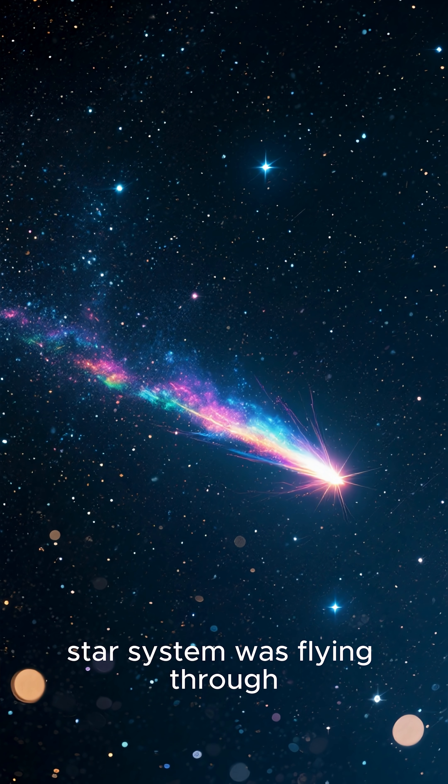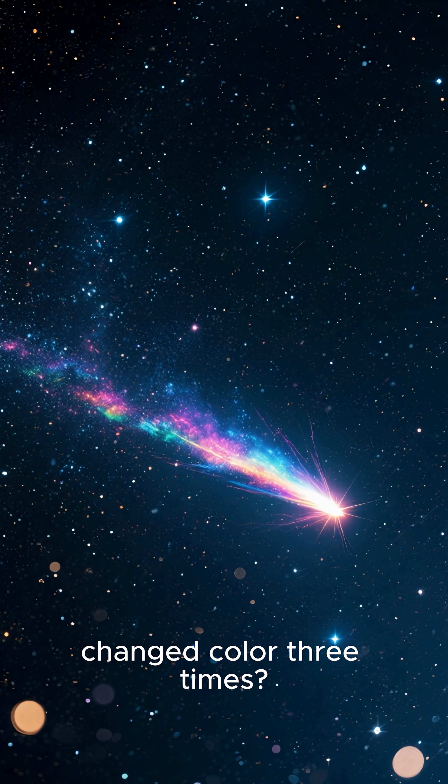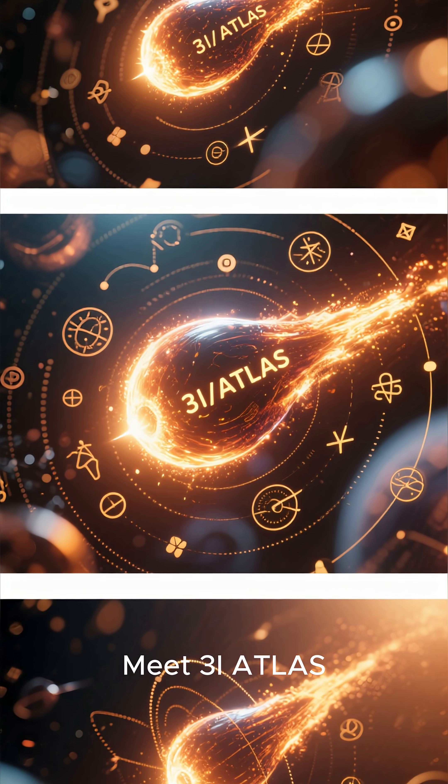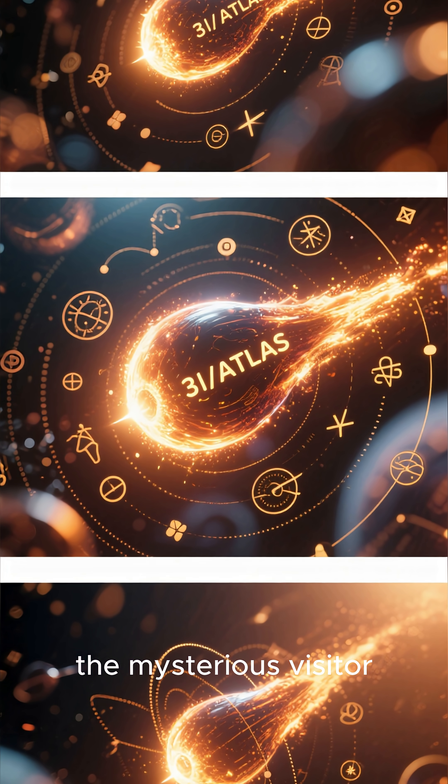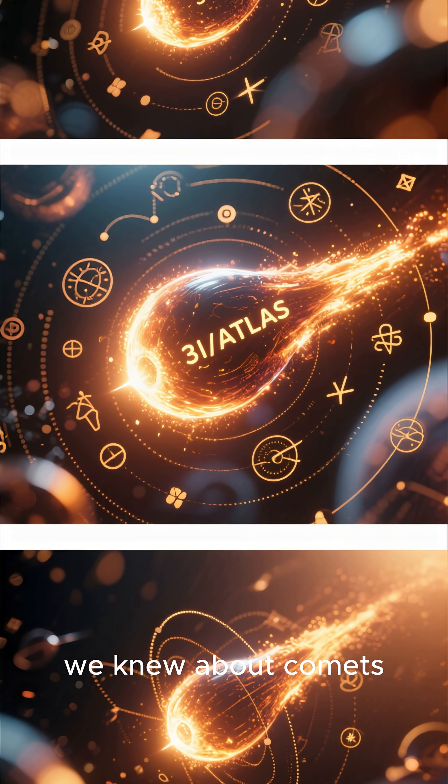What if a comet from another star system was flying through our solar system right now and had already changed color three times? Meet 3i Atlas, the mysterious visitor from deep space that's defying everything we thought we knew about comets.